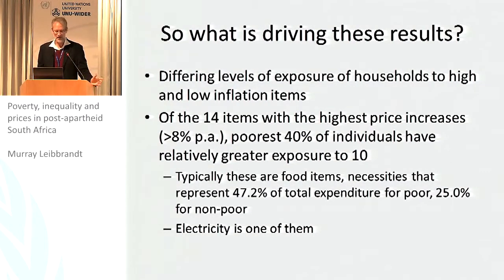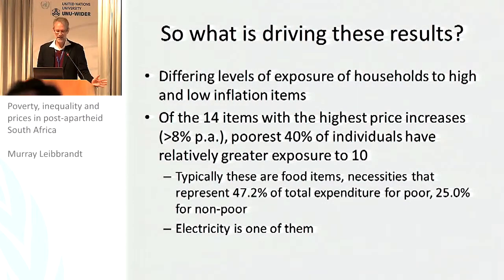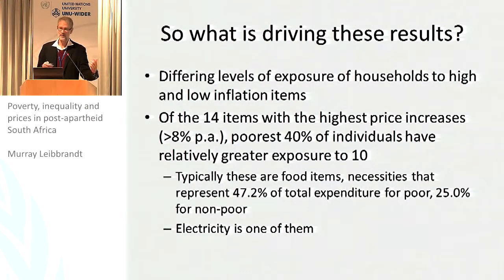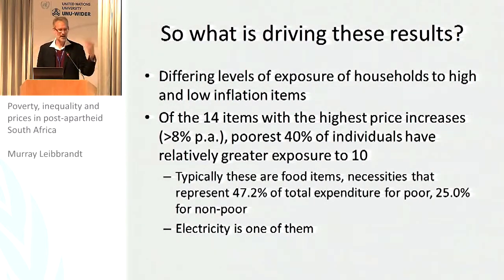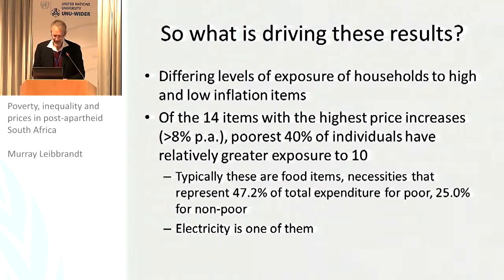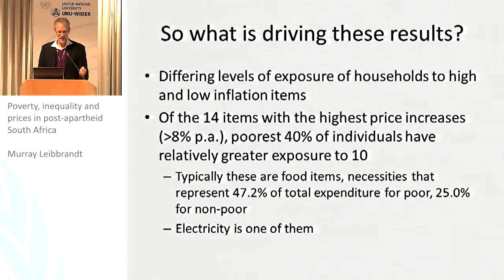There are obviously different levels of exposure of households to high and low inflation items. Of the 14 items with the highest price increases — greater than 8% per annum — the poorest 40% of individuals have relatively greater exposure to 10 out of the 14. Some of that is obvious, some of it is what we believe as development economists. Food items, for example, where the poor consume a greater share — we all know about Engel curves. Necessities were indeed very, very important.